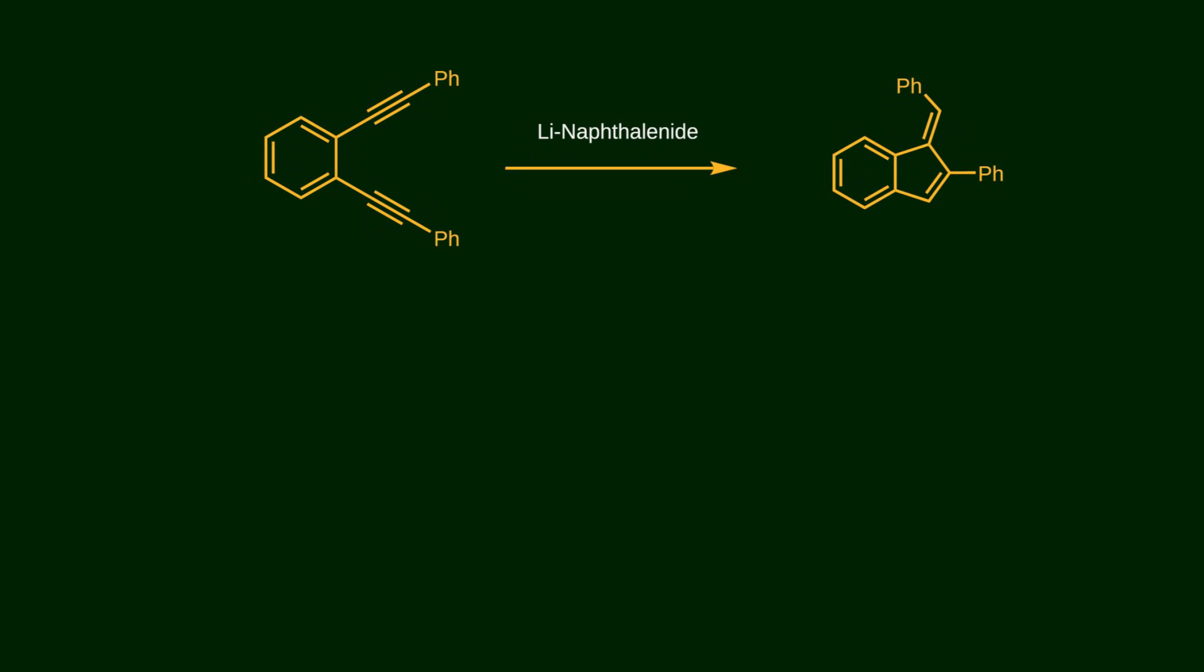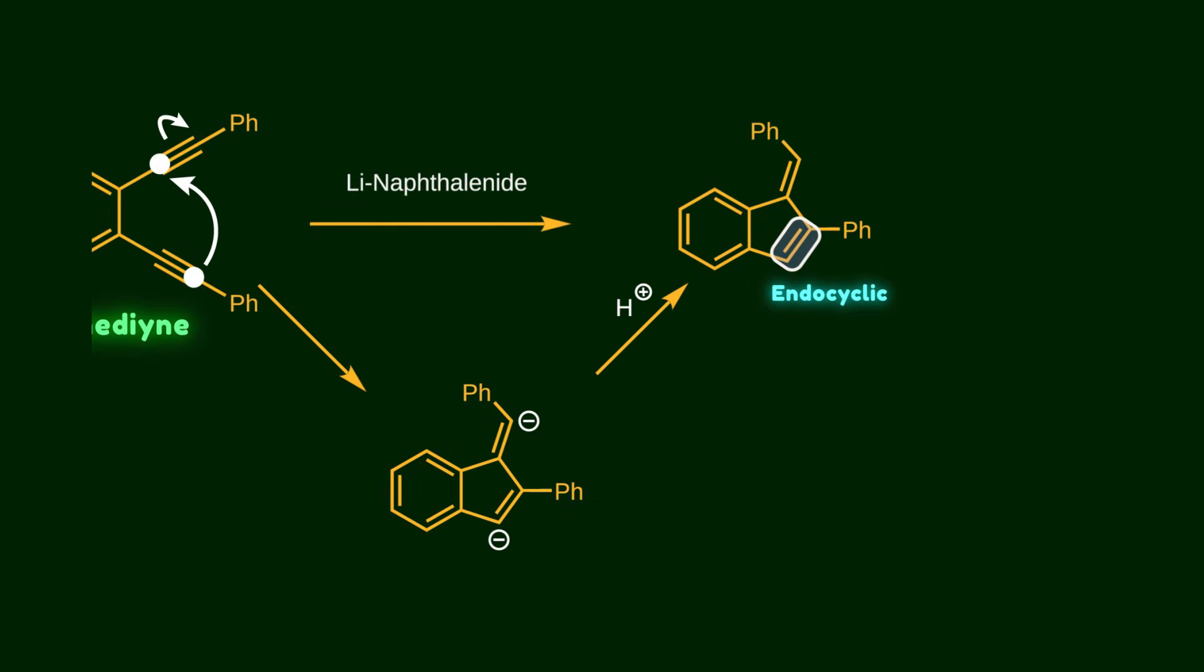Now let's see the synthetic application of this concept. Endiynes can undergo thermal cyclization with lithium naphthalenide to produce a reduced enediyne product. The reaction passes through a dienion species that is formed by treatment with lithium. After that, abstraction of proton leads to the final product. Notice that the product contains two types of double bonds, one endocyclic and one exocyclic.